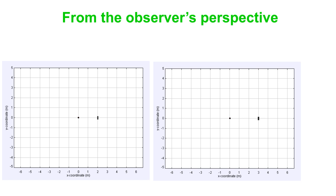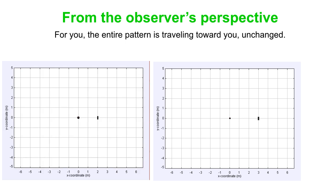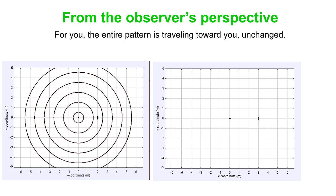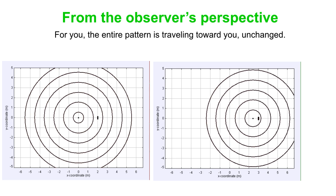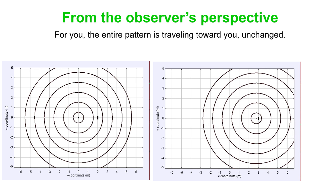Okay, so what do things look like from the observer's perspective? Then basically the entire pattern travels toward you unchanged. Again, on the left, we're seeing for reference just what things look like for the stationary observer. And then, really, this is you moving toward the observer, but from your reference frame, it's like the whole pattern is moving toward you. And so you do encounter more waves per unit time.